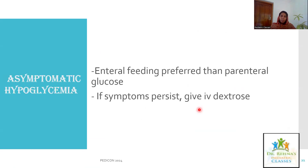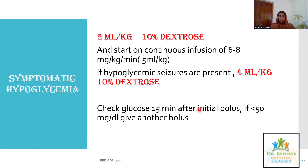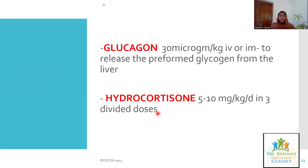For management: if hypoglycemia is asymptomatic, consider enteral feeds; if symptomatic, IV glucose is required. Give 2 mL/kg of 10% dextrose as a bolus, backed up with a continuous infusion of around 8 mg/kg/minute. If hypoglycemic seizures are present, give 4 mL/kg of 10% dextrose. Check glucose 15 minutes after the initial bolus; if still less than 50 mg/dL, give another bolus. Always back up with a continuous glucose infusion. Glucagon 30 mcg/kg IV or IM can be tried to release preformed glycogen, and hydrocortisone 5 to 10 mg/kg in divided doses can also be considered.